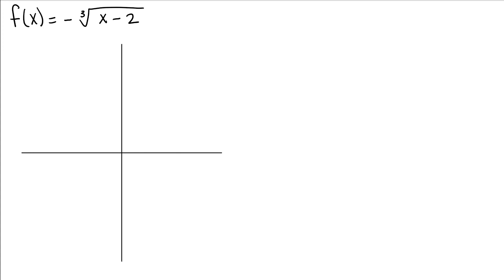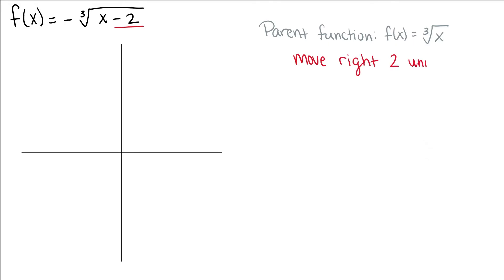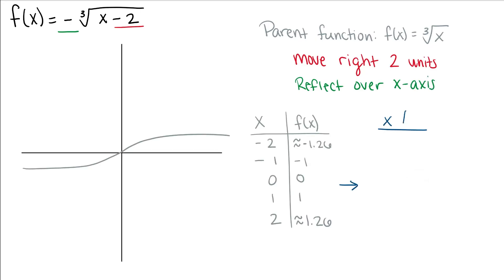Next, we have f(x) = -∛(x - 2). Our parent function is the cube root of x. Minus 2 tied to our x means we move right two units. And that negative on the outside means we reflect this over the x-axis. By performing these transformations, this is what our transformed function looks like.